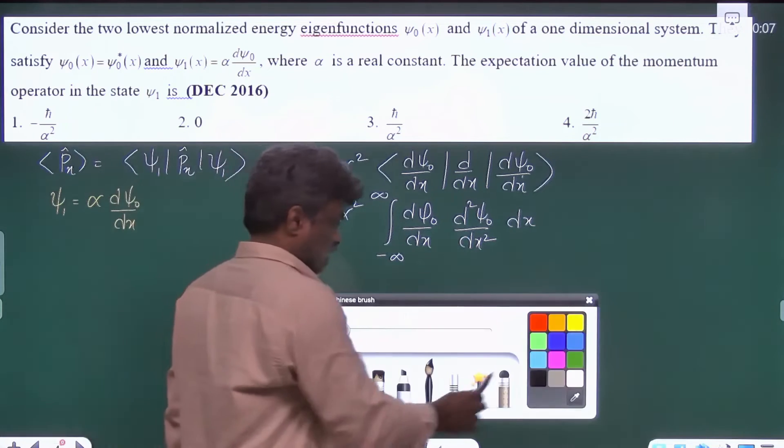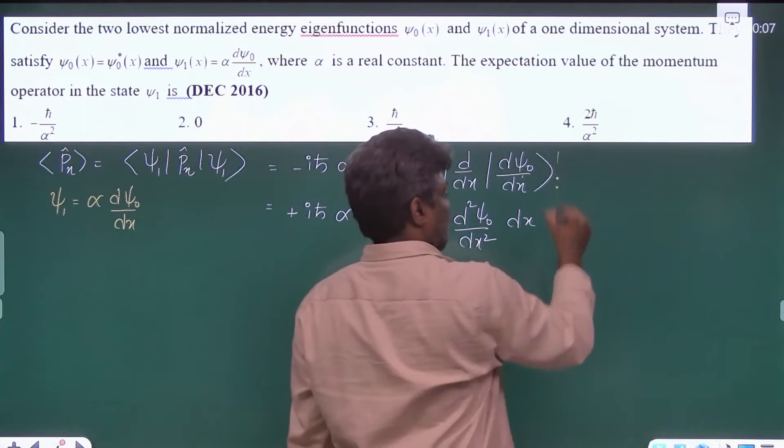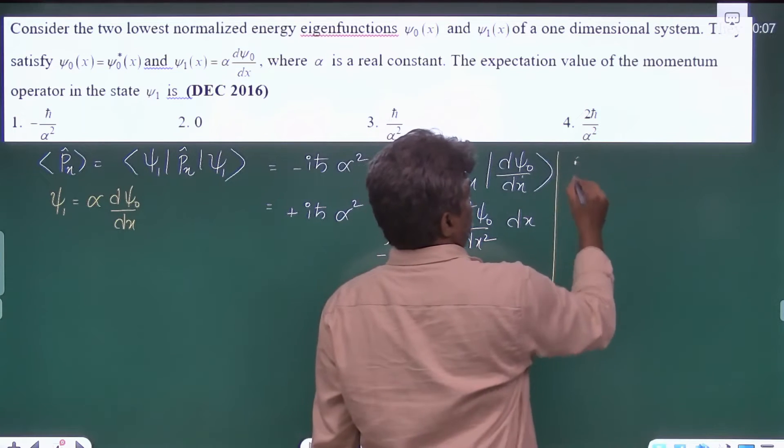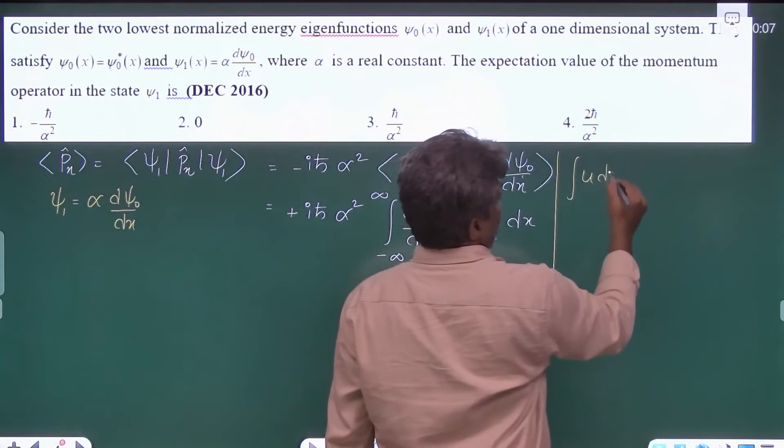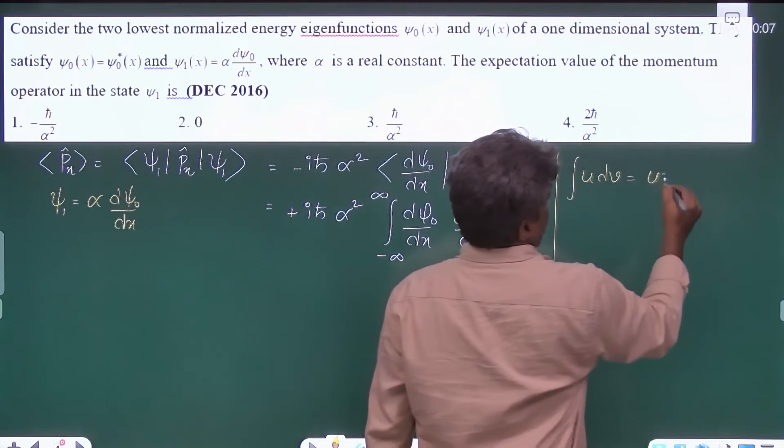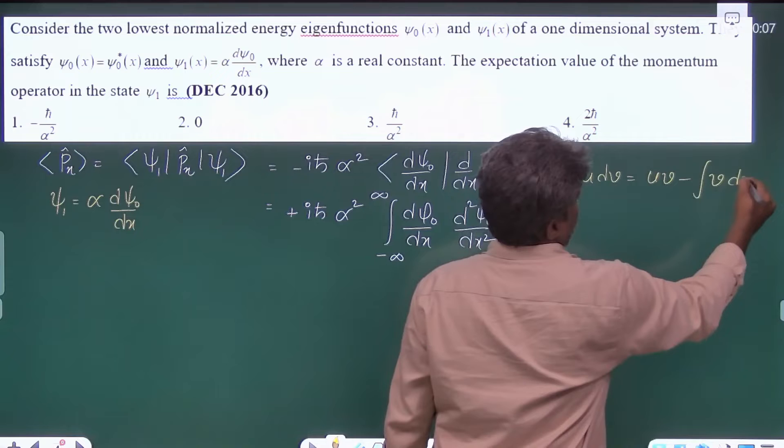Here we will use one integral formula, integral technique: integral u dv is equal to uv minus integral v du.